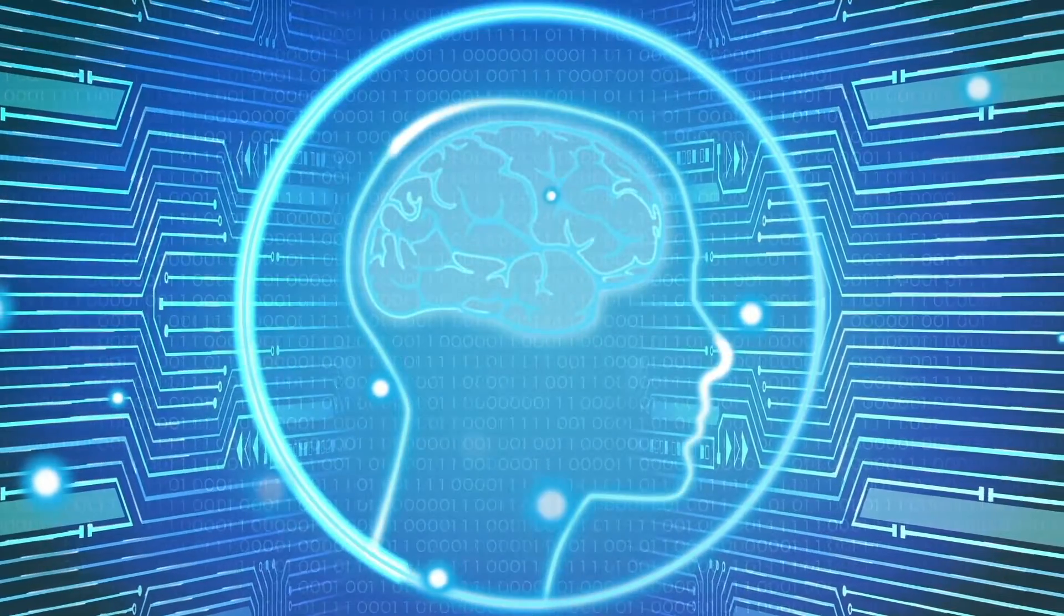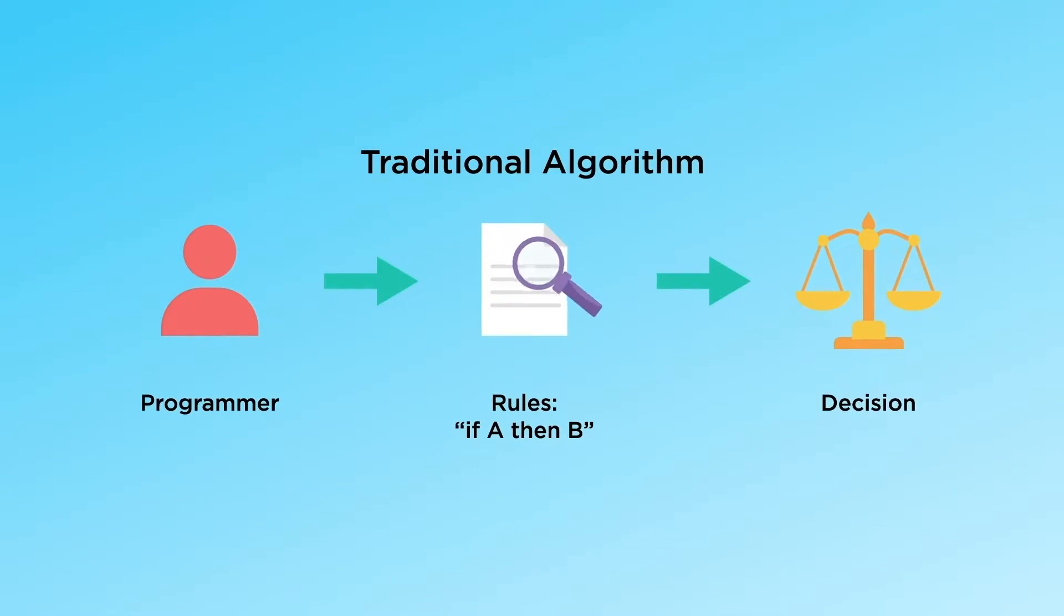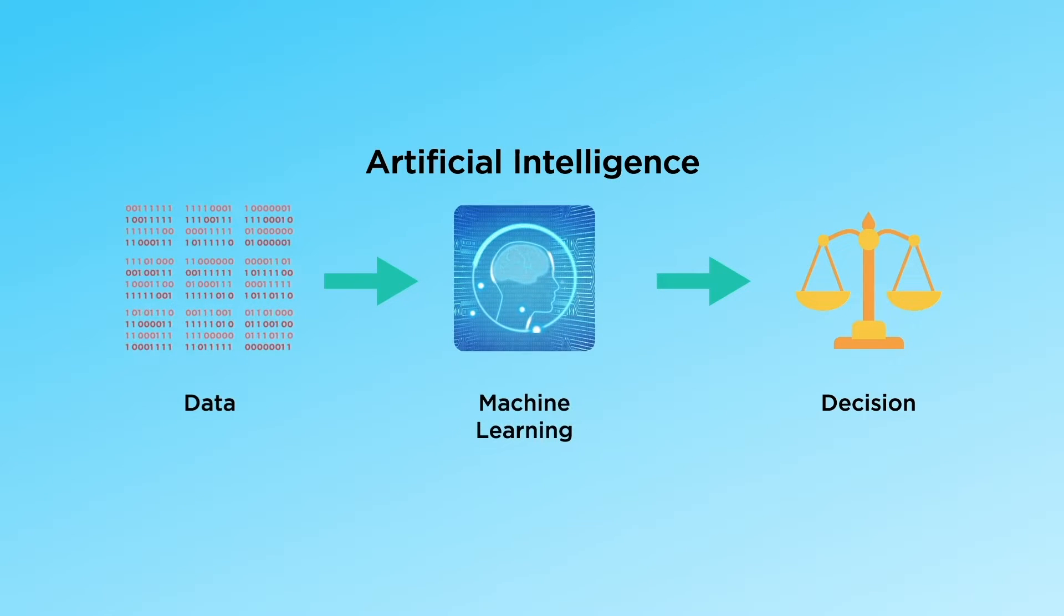Artificial intelligence has changed the way we all work. In traditional software, a programmer implements fixed rules, whereas AI derives these rules itself from data.